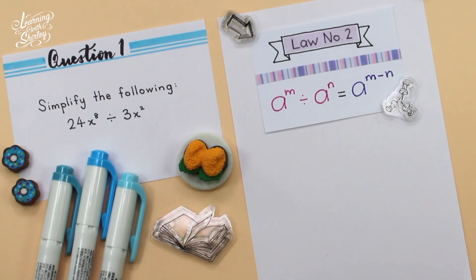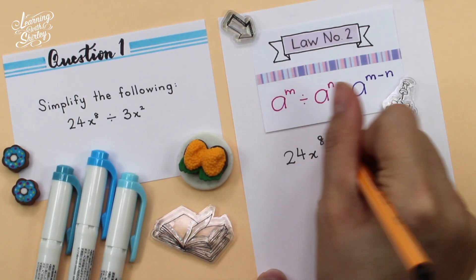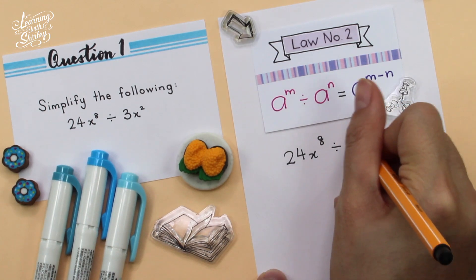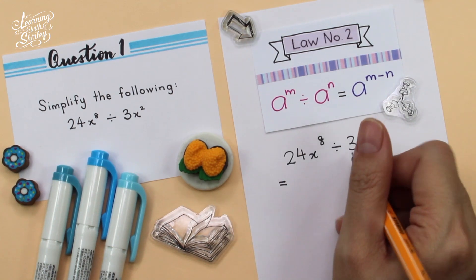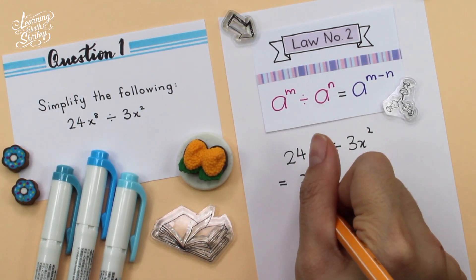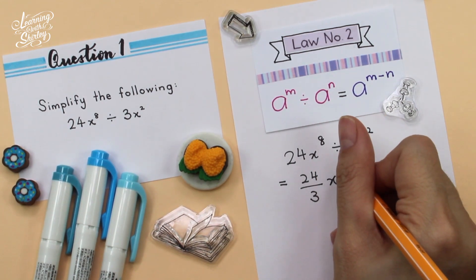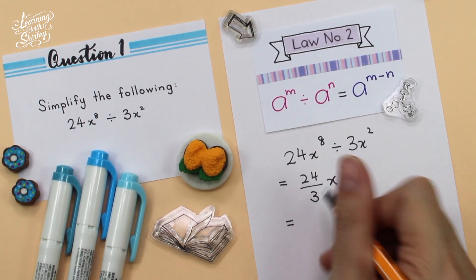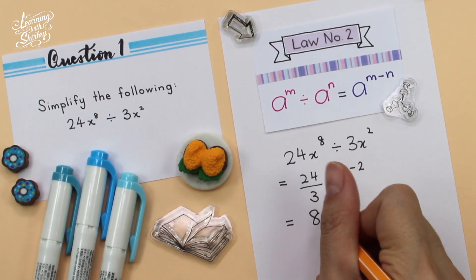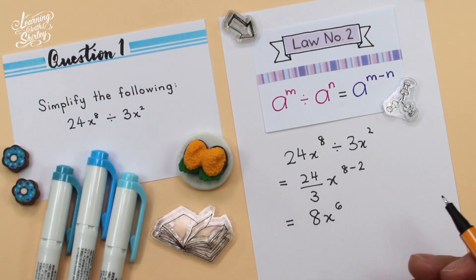First of all, we write down the question given, which is 24x to the power of 8 divided by 3x square. So to solve this, we divide the coefficients first, which is 24 over 3, and for x, we subtract the indices, which is 8 minus 2. So equals 24 divided by 3 is 8x, 8 minus 2 is 6. So the final answer is 8x to the power of 6.